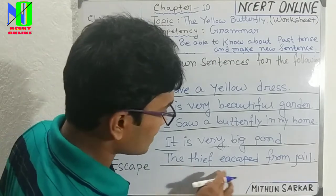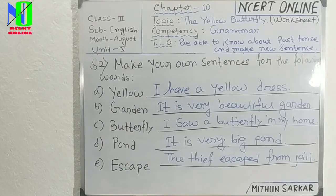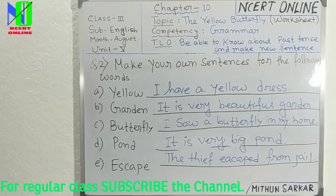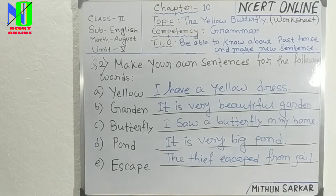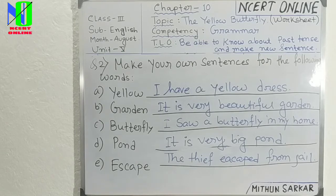For 'escape,' for example: he escaped from jail. So note that down. These five are your examples, but you can make more sentences from more words. So: yellow, garden, butterfly, pond, escape. For example — I have a yellow dress; it is a very beautiful garden; I saw a butterfly in my home; it is a very big pond; the thief escaped from jail.